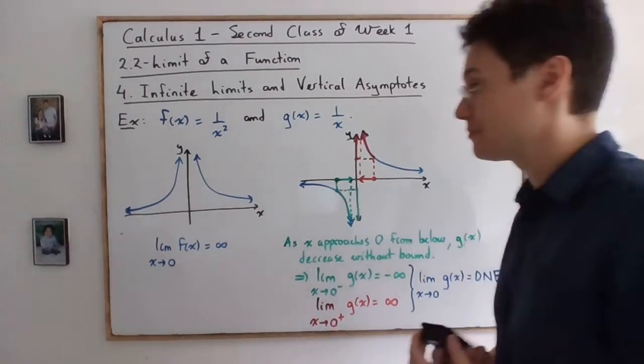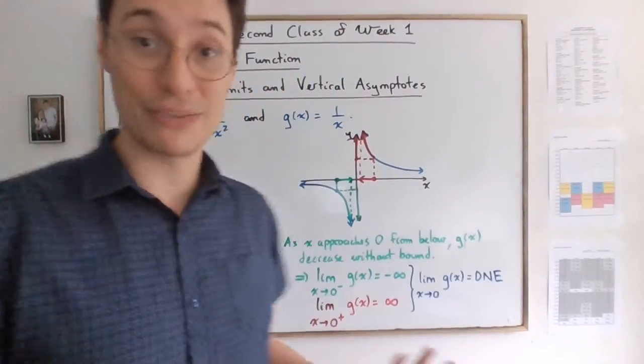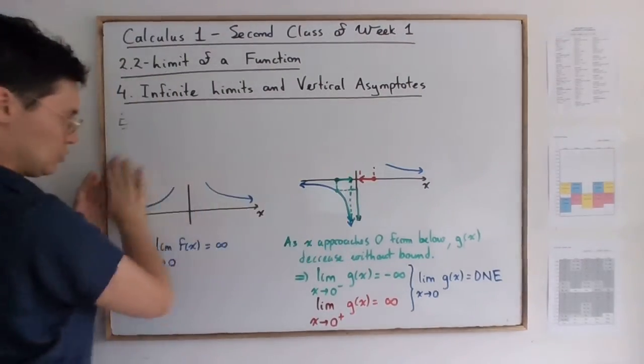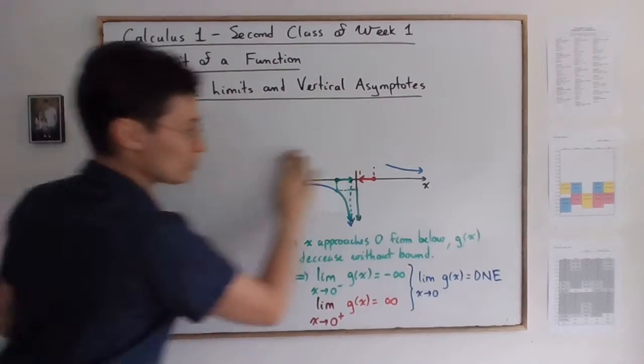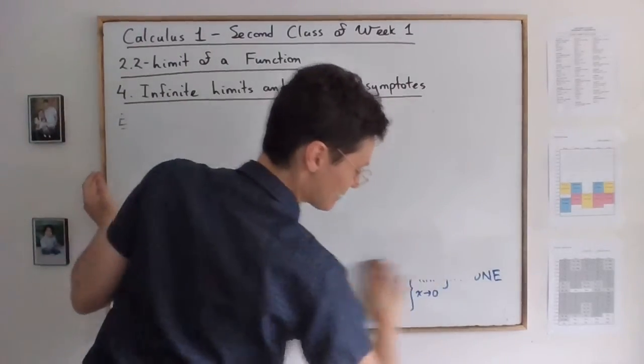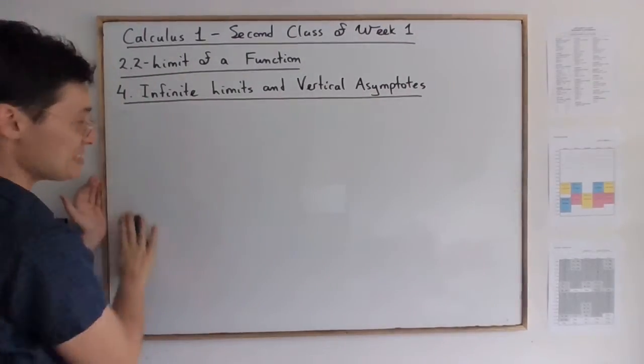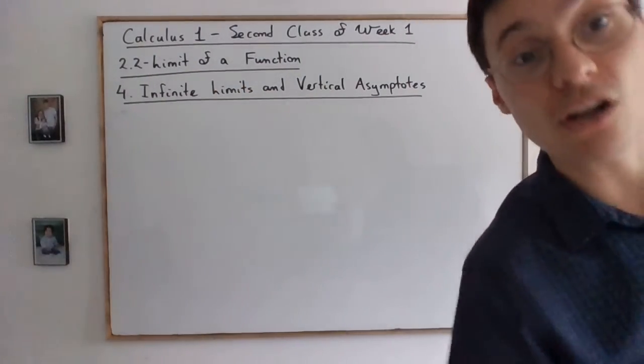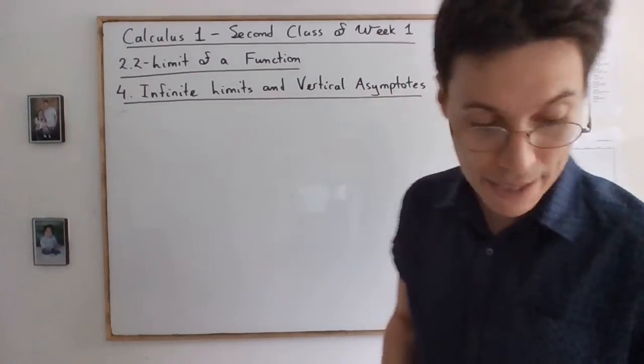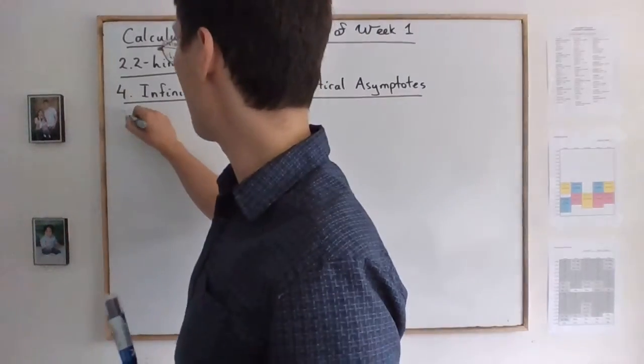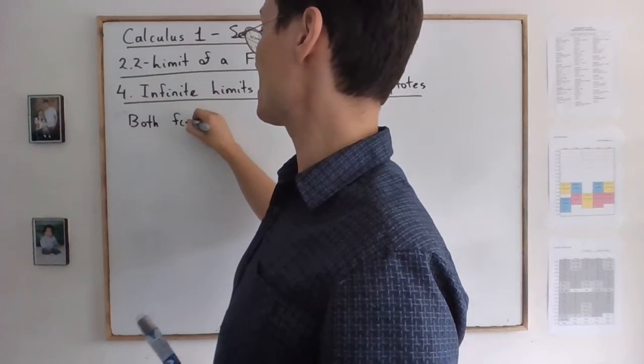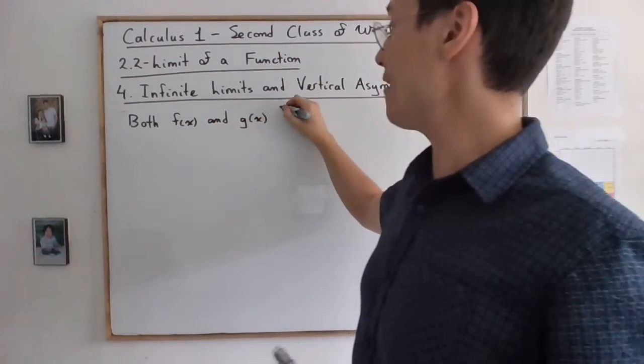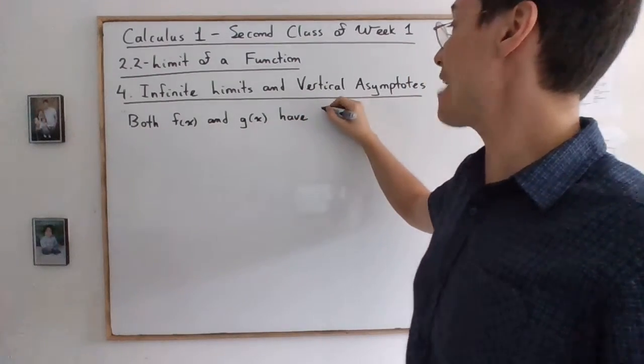So now I'm erasing this. Don't forget you can press pause to make sure that you're taking it down. But what's important to realize is that in both of these graphs, you have a vertical asymptote. So both f(x) and g(x) have, that is something they have in common.